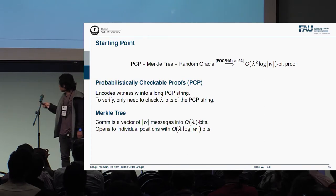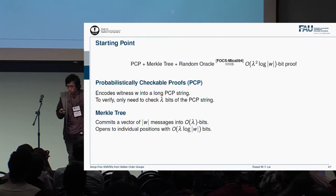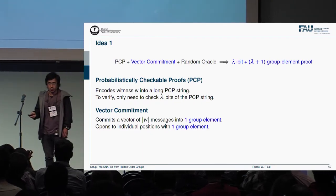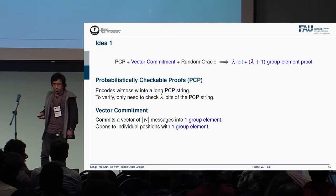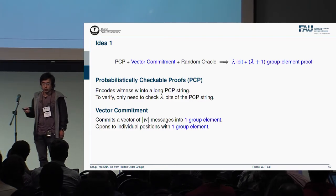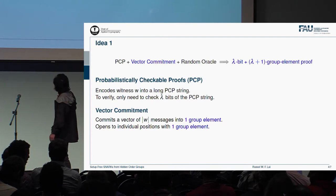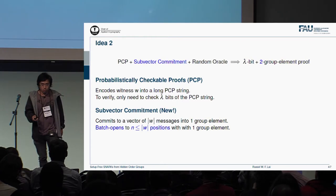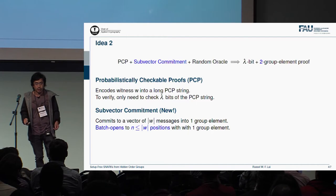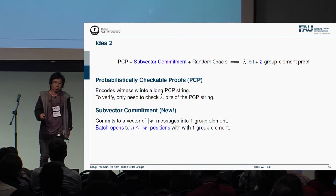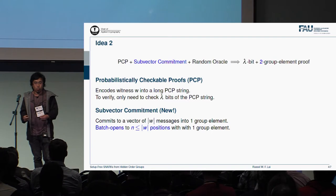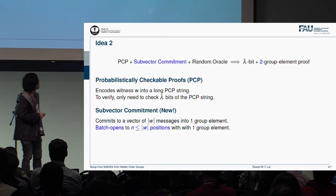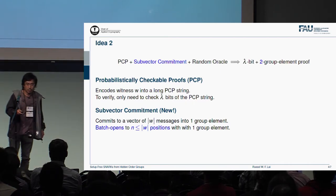In order to reduce this all the way down to a constant, we have two ideas. The first idea is to replace the Merkle tree with a vector commitment, which allows us to open to individual positions with one group element. The resulting proof has this proof size, which is not very good because it still has Lambda group elements. So here comes the second idea: we will generalize the vector commitment into something we call sub-vector commitment. What it does is basically open to a bunch of positions with still just one group element, and this allows us to reduce the proof size all the way to just two group elements plus Lambda bits.